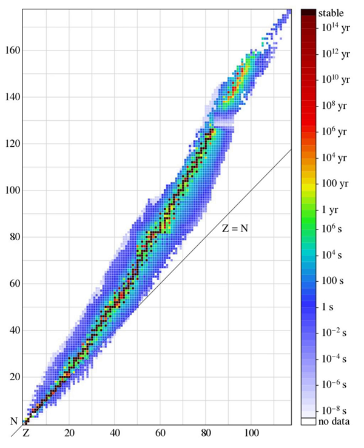Isobars are nuclides having the same mass number, e.g. carbon-12 and boron-12.